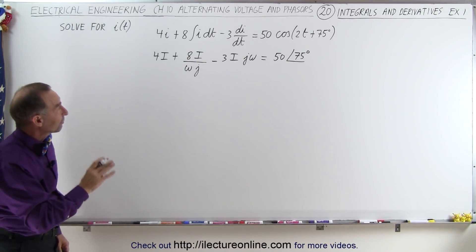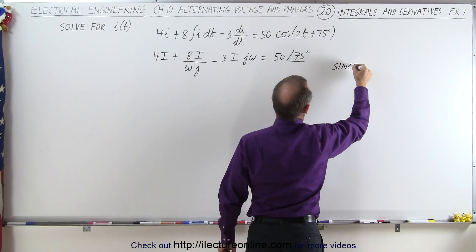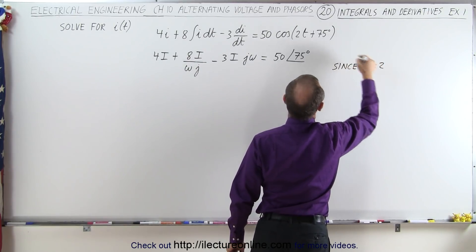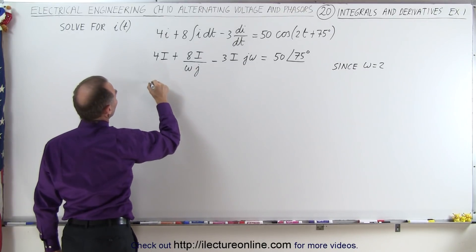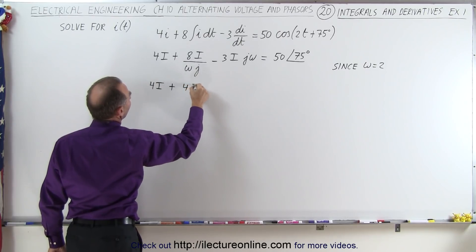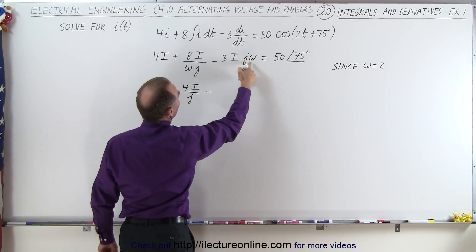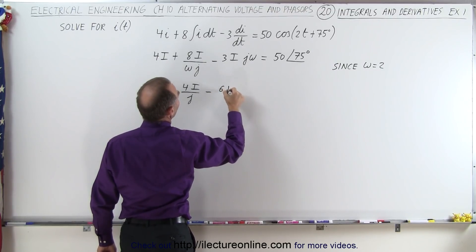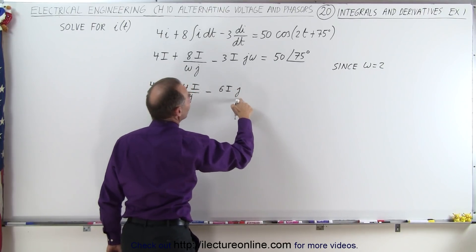All right, next, since we know the value for omega, since omega is equal to 2, according to our equation here, we can then replace omega by 2, so this becomes 4i, plus a divided by 2, which is 4i divided by j. And here that becomes minus 3 times 2, which would be 6i times j.